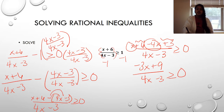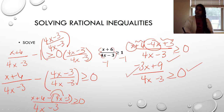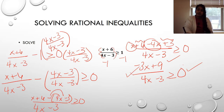Combining like terms: −3x + 9 over (4x−3) ≥ 0. Step one — single fraction with zero — check. Step two — simplified — check. I could factor out a 3 from the numerator to get 3(−x+3), but it's essentially as simple as needed.